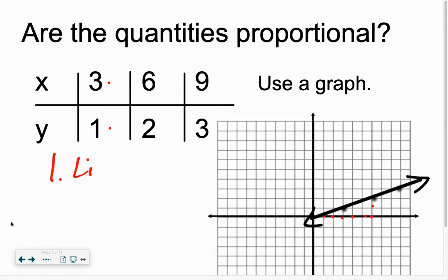We talk about using a graph to see if they're proportional. There's two things. It needs to be a straight line. Everybody say line. Okay. Write down number 1 and put down the word line. It needs to be a straight line. So is our graph over here going in a straight line? Yes it is. That's line. Everybody say line.